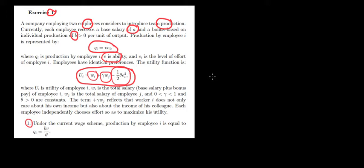To find out the optimal production, we need to know the optimal effort, because production depends on the amount of effort as we saw. So the first step is to write the utility function in terms of effort so that we can solve it.